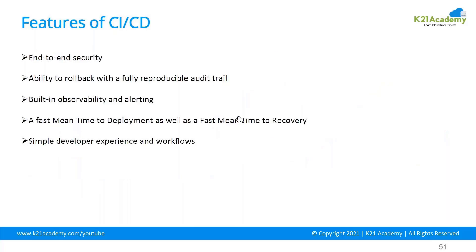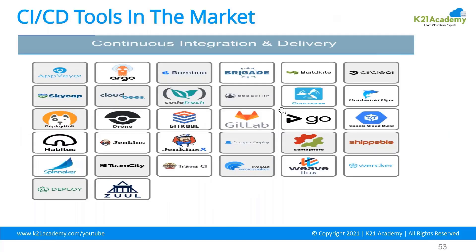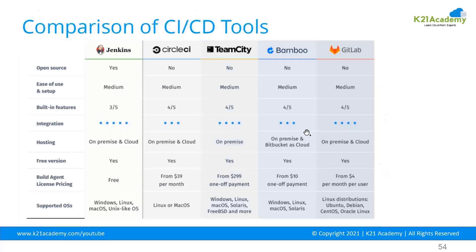There are many CI/CD tools in the market. You have Jenkins, Jenkins serverless which is coming up recently, Spring, TeamCity, and many more. Which tool you use depends on your use case. Jenkins is open source and free to use, while other tools like AWS CodePipeline come with additional charges.